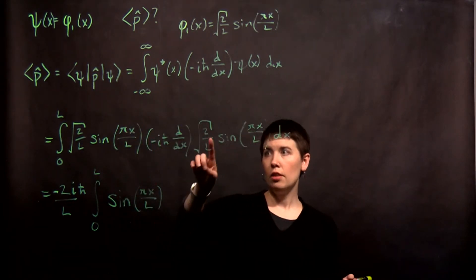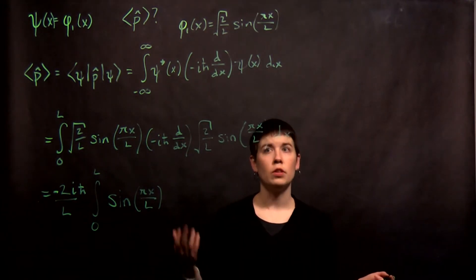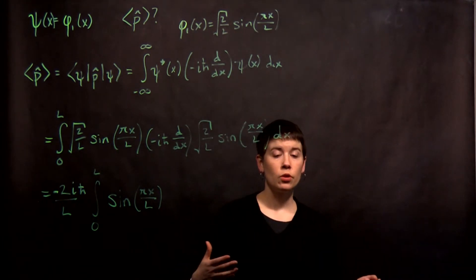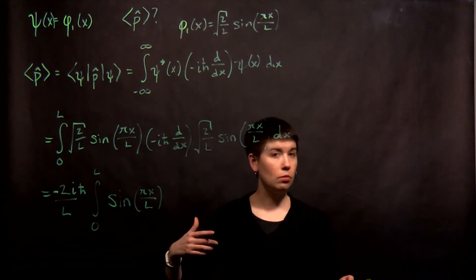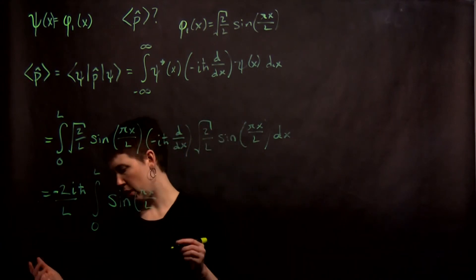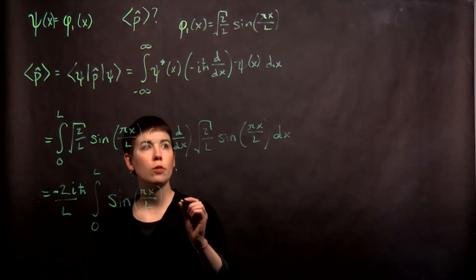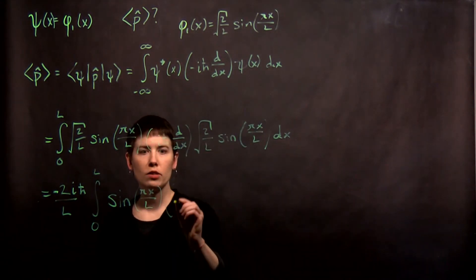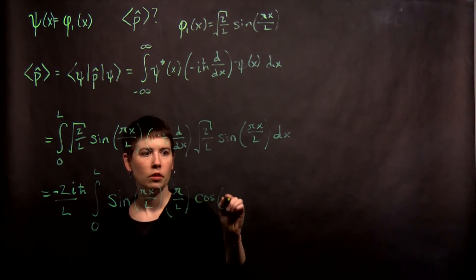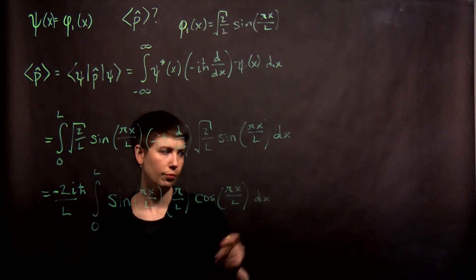Then we need to take the derivative of this. What is the derivative of sine of something x with respect to x? Sine is going to become cosine. So sine becomes cosine, and we have to pull the coefficient from inside out. So that's pi over L, and then I have cosine of pi x over L dx.